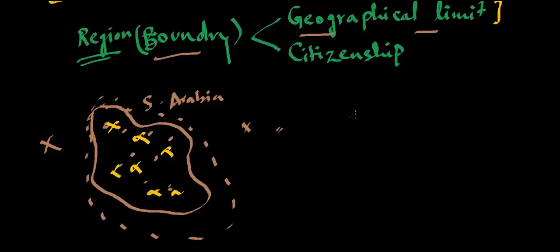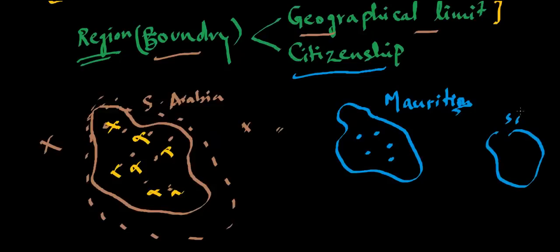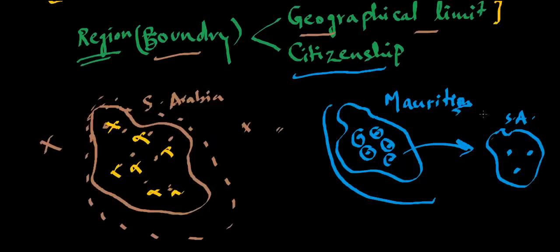The other way of defining the boundary is based on citizenship. For example, take Mauritius. There are people residing and producing within Mauritius, but there are also Mauritians outside — say, in South Africa — doing work and earning income. Based on citizenship, whatever the people of Mauritius produce, whether inside the boundary or outside the boundary, will be counted in the national output.